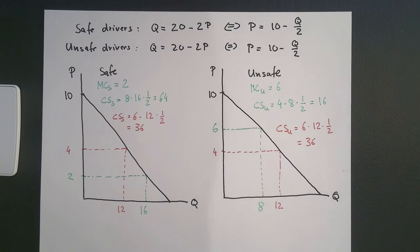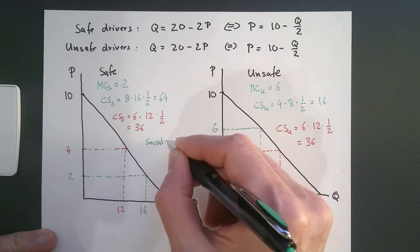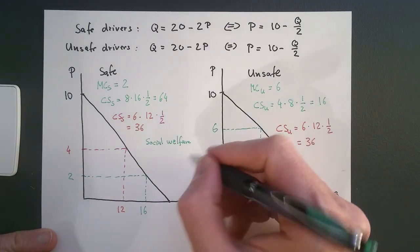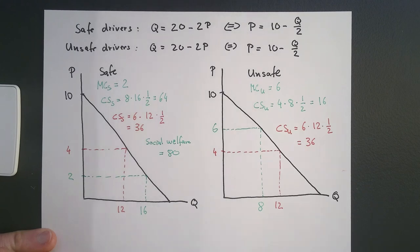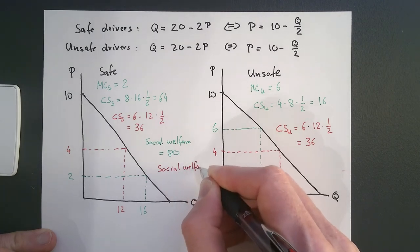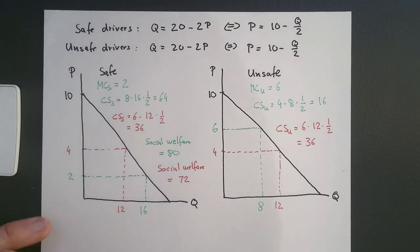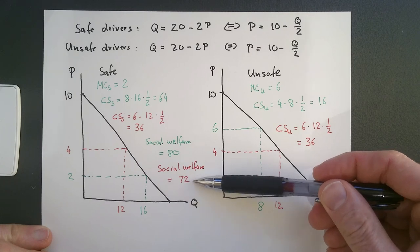If we compare this to social welfare under price discrimination, the social welfare for both drivers is 64 plus 16, which equals 80. In the case of no asymmetric information, social welfare is 80, whereas in the case of asymmetric information — when they can only charge one single price — social welfare is 72. Hence, we see that with price discrimination, or without asymmetric information, social welfare is higher than when asymmetric information is present, demonstrating the inefficiency caused by asymmetric information.